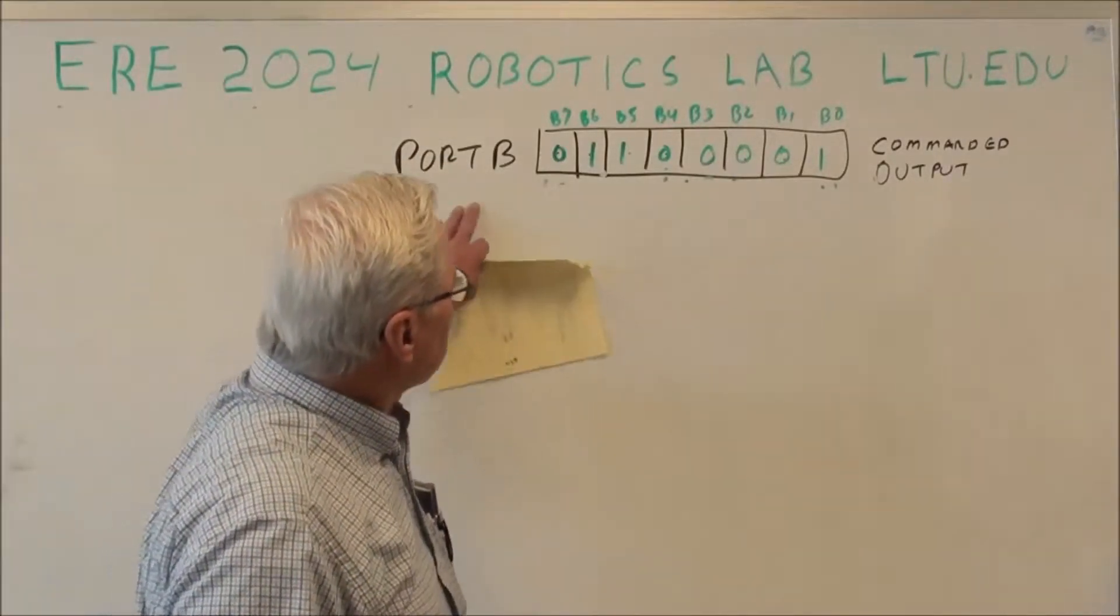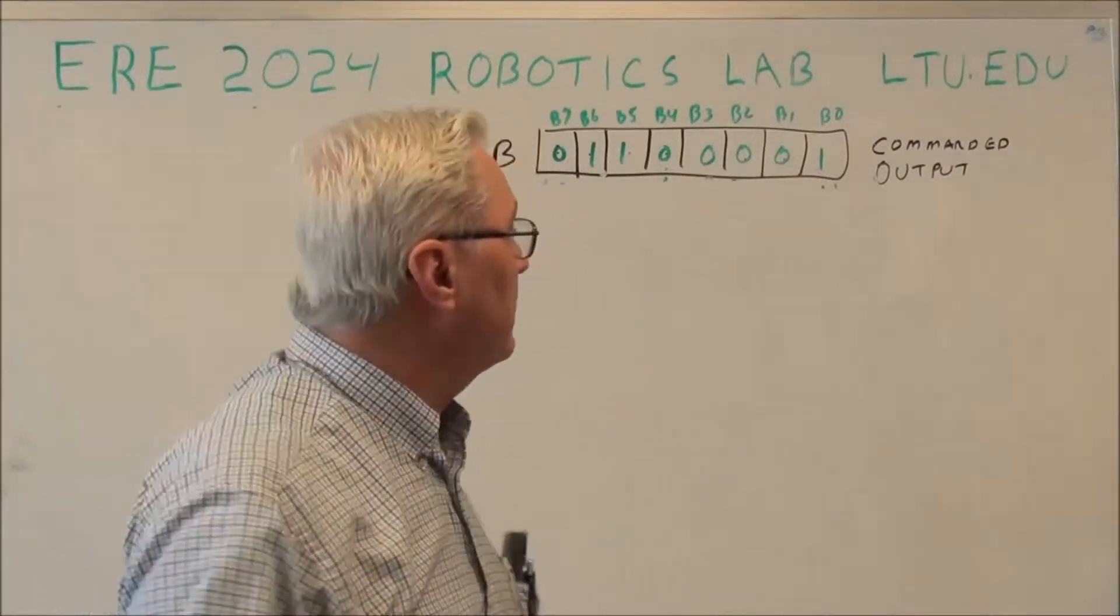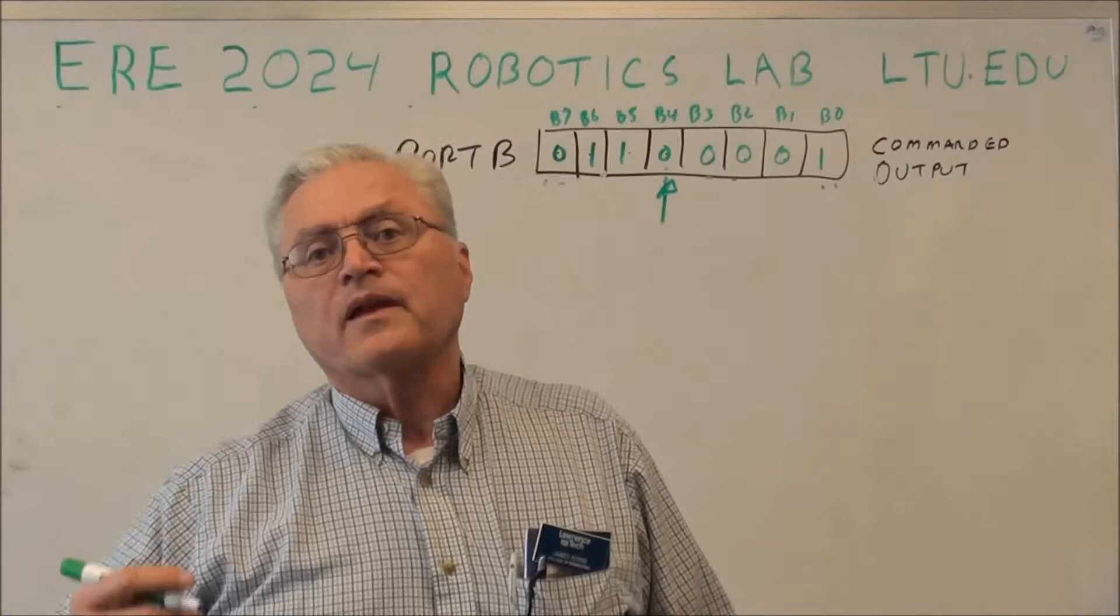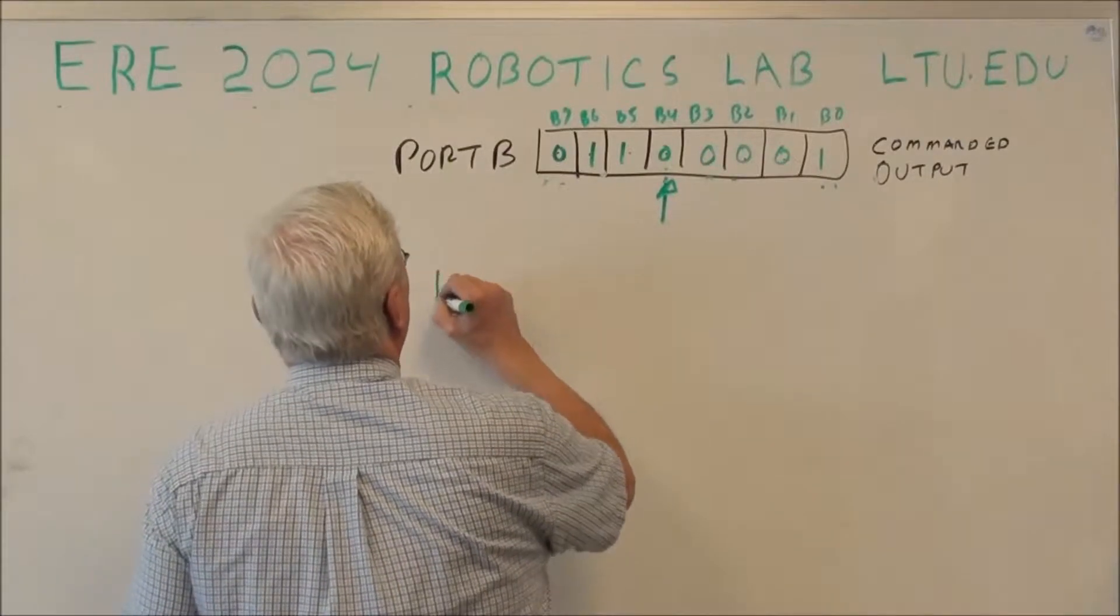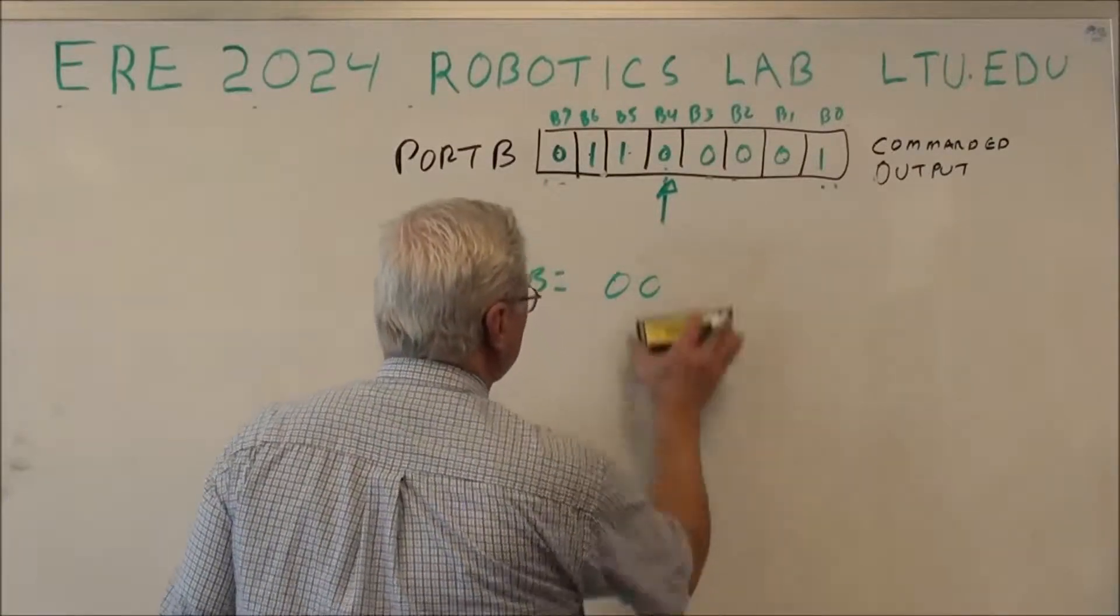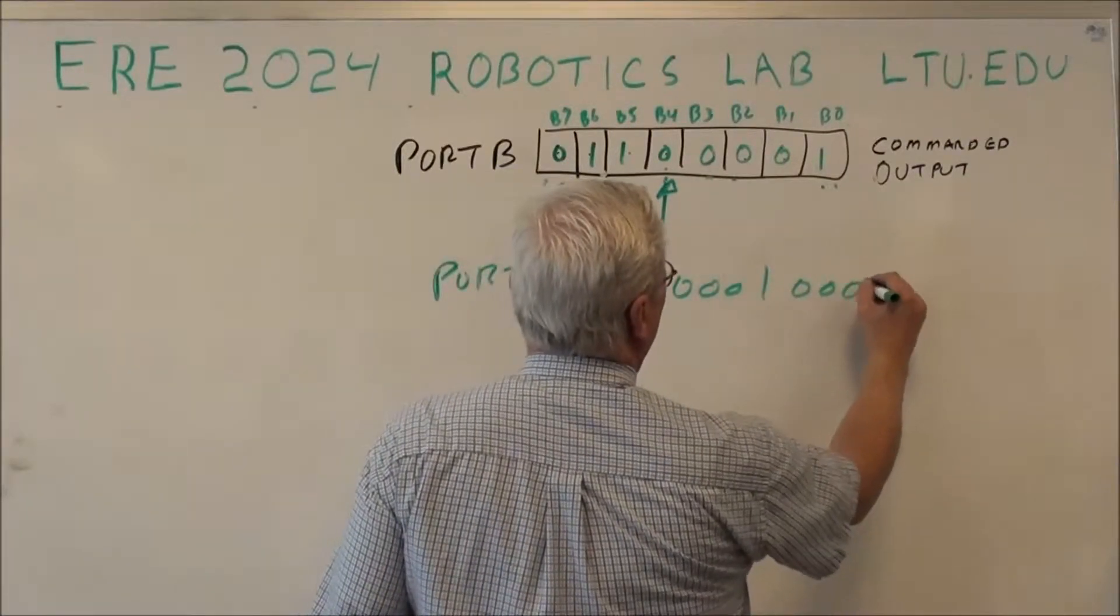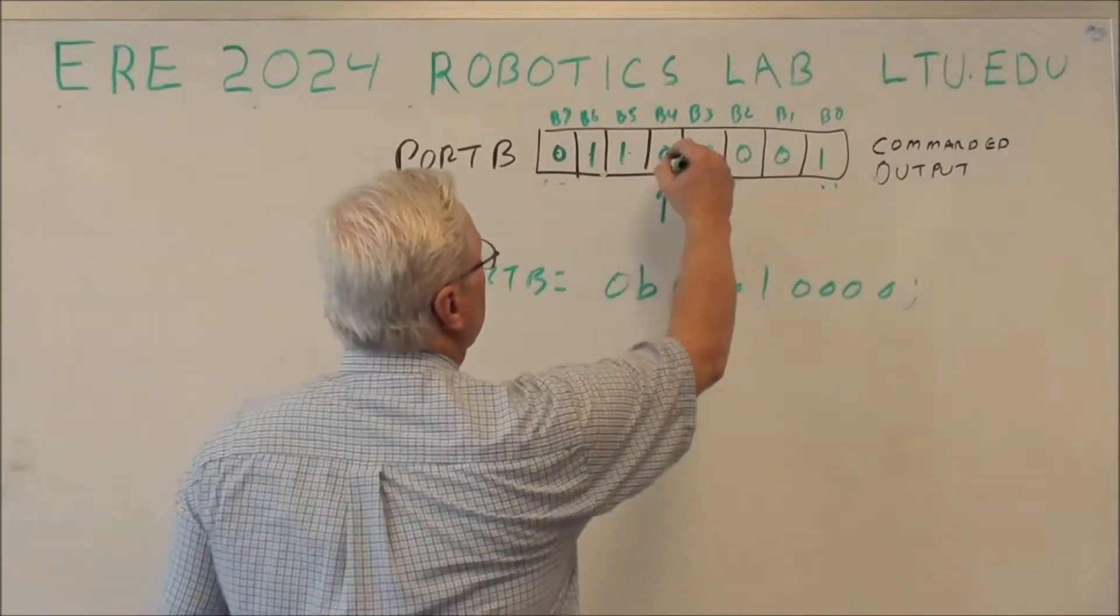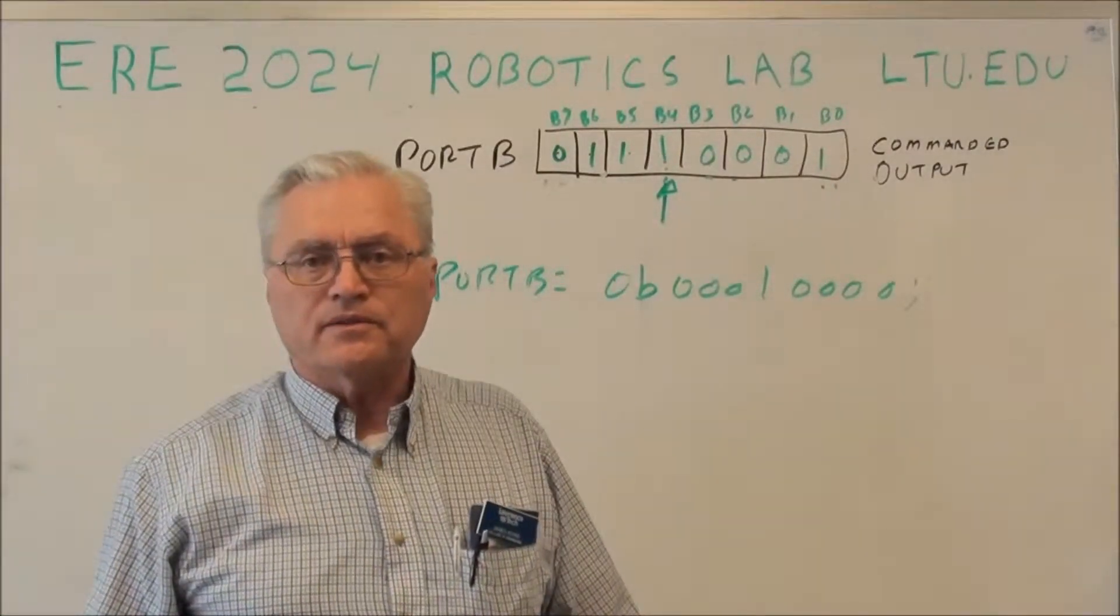So anyhow, this is our port B, we want to write to it, we want to set a particular pin. Let's set this pin B4 right here. I want to set that pin equal to 1. How am I going to do it? I could just say that port B equals 0B 00010000. I could do a binary assignment like that, and I would get a 1 in this particular place here. But at the same time, I've clobbered all the rest of the registers. Not good.